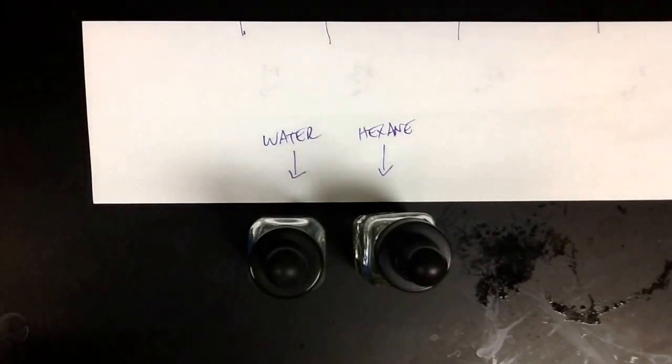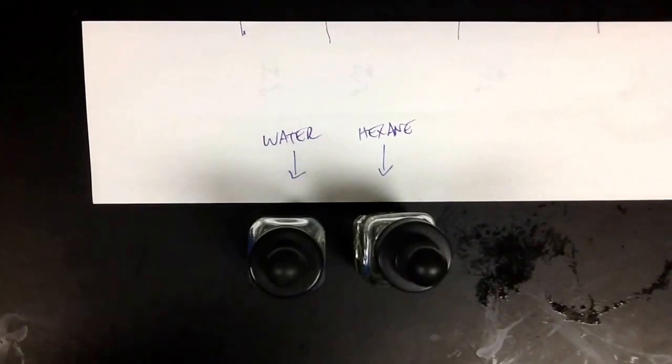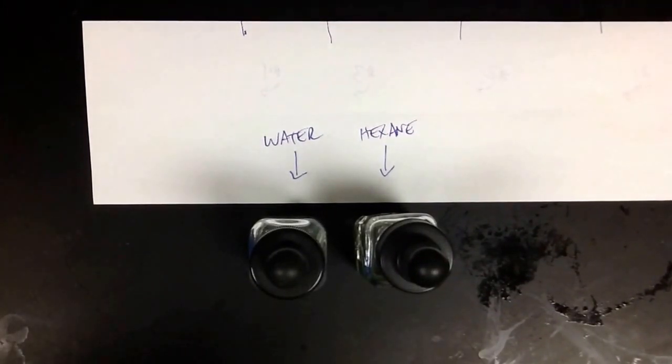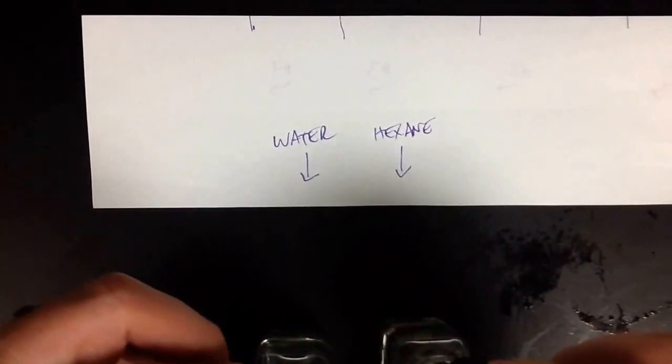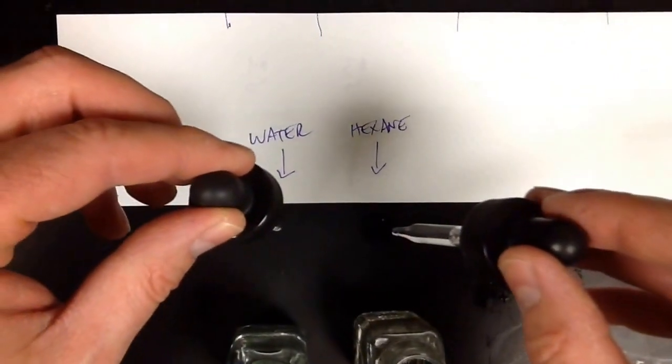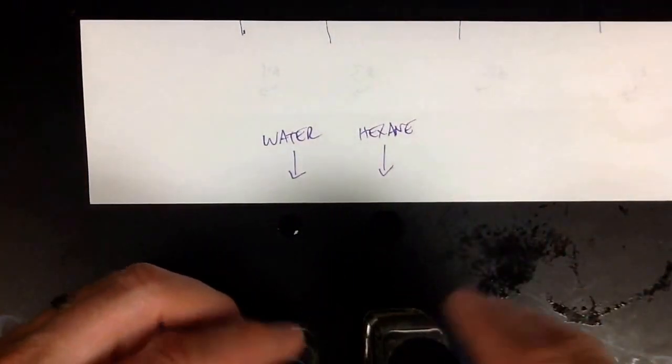The first thing we're going to do is talk about the rate of evaporation. I'm always going to have water on the left hand side and hexane on the right. We're going to take drops of each, just one drop, put it on the lab table, and see which one evaporates first.